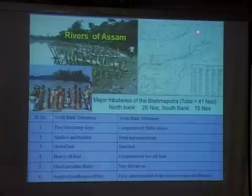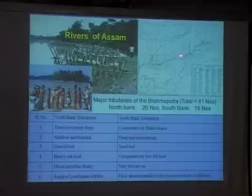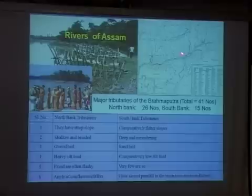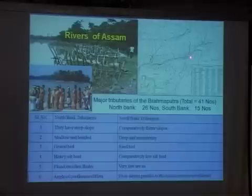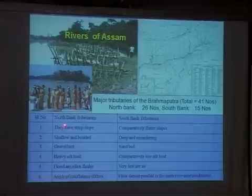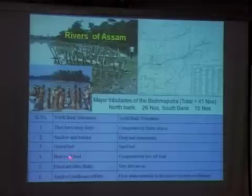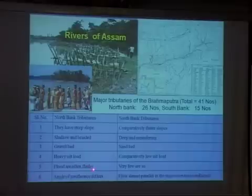There is an apparent movement where the North Bank is slightly aggrading every time, and there is erosion on the South Bank. That is why people on the South Bank suffer more from the erosion phenomenon. Typically, the North Bank tributaries have a steeper slope, they are shallow and braided, they are gravel bed rivers, they have a heavy silt load, and floods are very often and flashy.